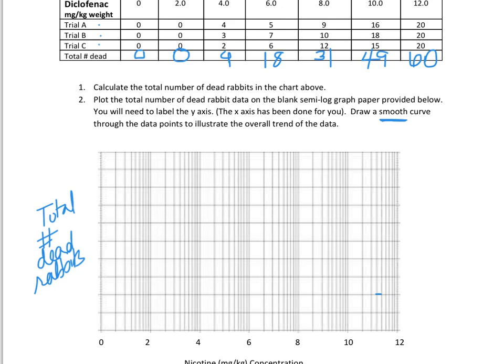If you just label it 'rabbits,' that would not work on an AP test because that's not specific enough — the actual y-axis label is 'total number of dead rabbits.' Make sure you are very specific. Our data goes from zero to sixty, so we count our lines — there are only ten lines, so we can't go by fives. I'm going to go by tens: ten, twenty, thirty, forty, and so on.